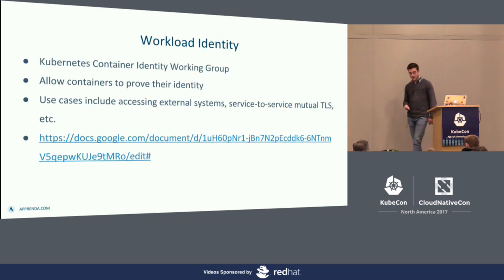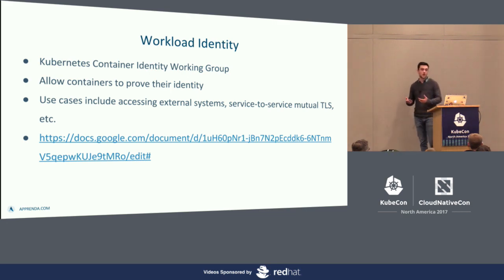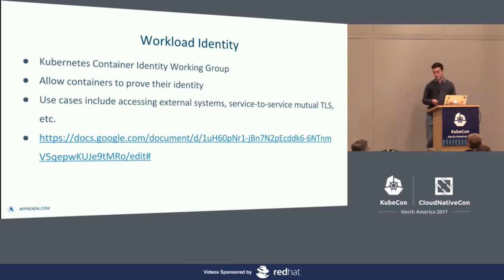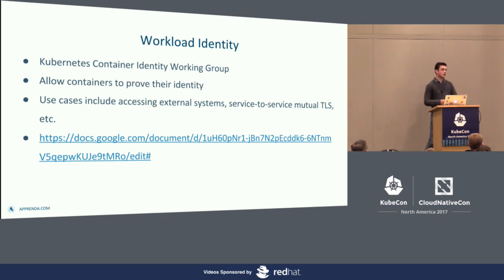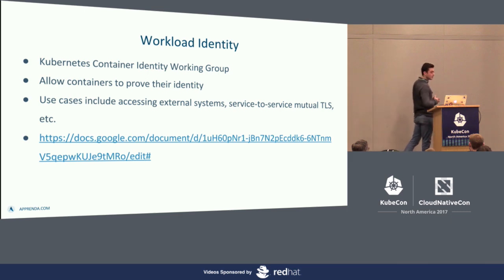Similarly, at the workload layer, there's actually a working group working towards allowing containers to prove their identity outside of a Kubernetes cluster. Inside the cluster, each workload has a service account they can use to talk to things running on the cluster. But for accessing external services, there's the Kubernetes Container Identity Working Group, which is working towards a mechanism allowing containers running on the cluster to access external systems running off the cluster. Another potential use case — though there's some overlap with something like Istio — is potentially Kubernetes doing service-to-service mutual TLS everything out of the box. If you want to learn more, these are the notes of the working group and they have weekly meetings.